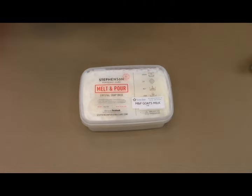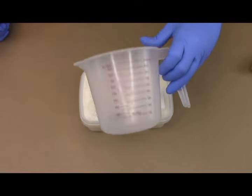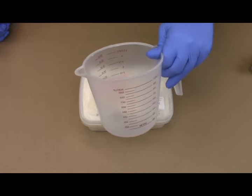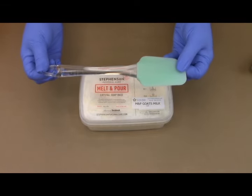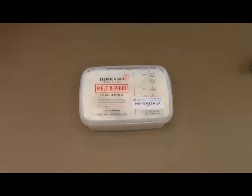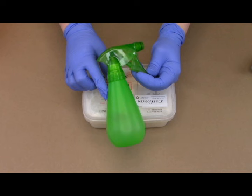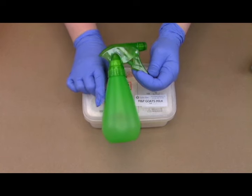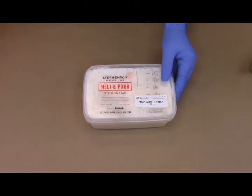You're also going to want to get a microwave safe container like this. You can also melt your soap in like a pot on the stove, but I'm just going to be using the microwave today. And then a spatula so that I can stir everything together. And then the last thing, which is optional, but I always like to use it, is a spray bottle with isopropyl alcohol. This is basically just so you can pop the bubbles that'll form as you pour the soap into the molds. So let's get started.